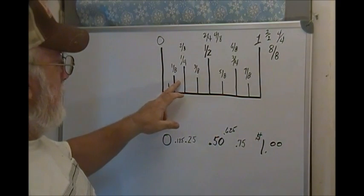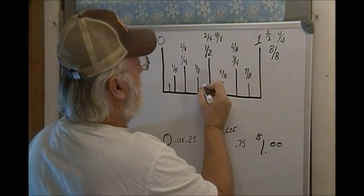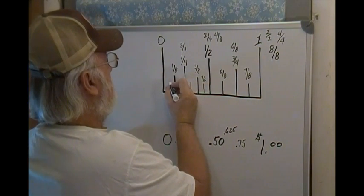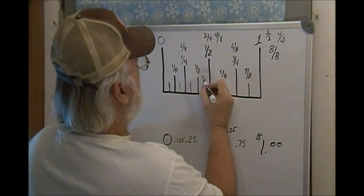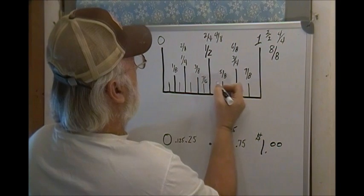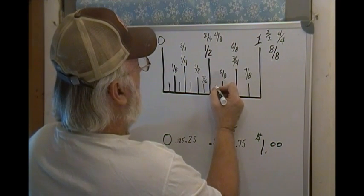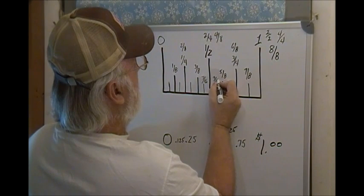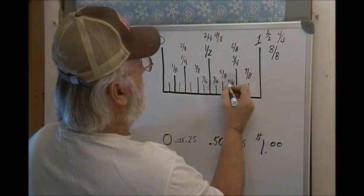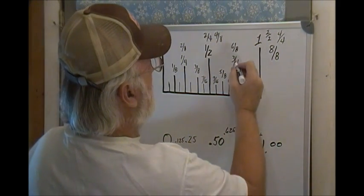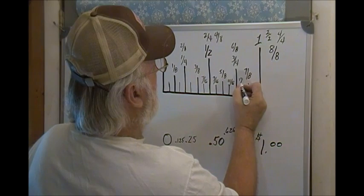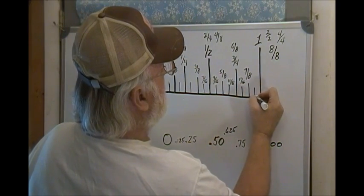The next little mark you could have down here would be a sixteenth. And it would be two sixteenths, three, four, five, six. And then right here, you know your wrenches? There's a seven sixteenths. And you know that a seven sixteenths wrench, you know a seven sixteenths is smaller than a half, right? And then you've got a nine sixteenths, which is bigger than a half. Eleven sixteenths, which is bigger than five eighths. Thirteen sixteenths. And fifteen sixteenths.